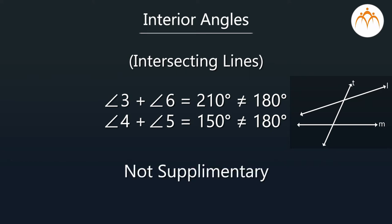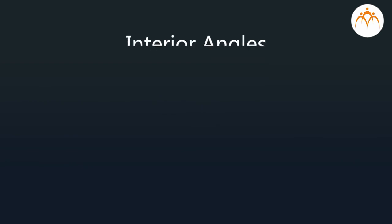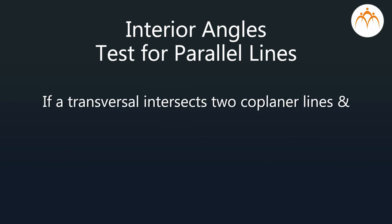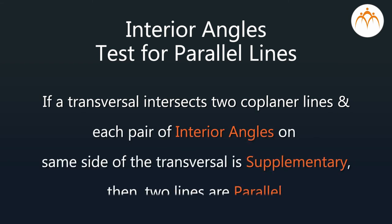That means the interior angles in each pair are not supplementary, whereas in the case of parallel lines, angles in each pair of interior angles are supplementary. This brings us to a conclusion: if a transversal intersects two co-planar lines and each pair of interior angles is supplementary, then those two lines are parallel.